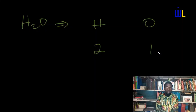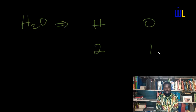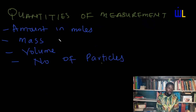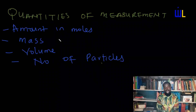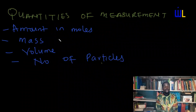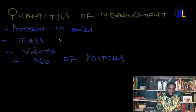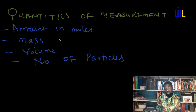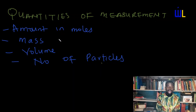What are the quantities of measurement in chemistry? There are four of them, majorly. And what are they? Amount in moles, mass, volume, and number of particles. So let's define them to understand them as we go on in this study.